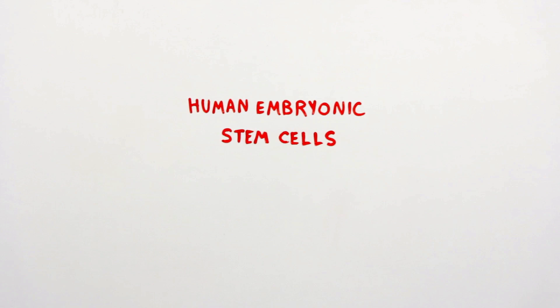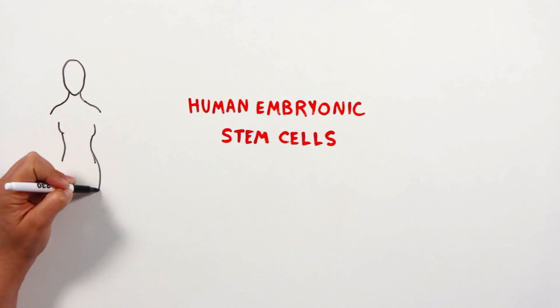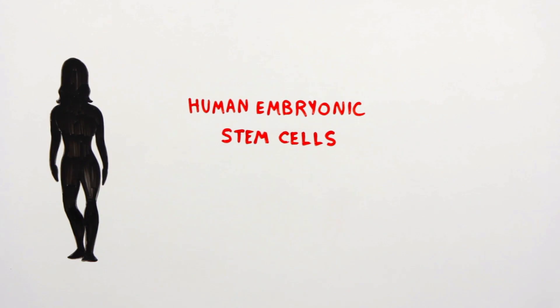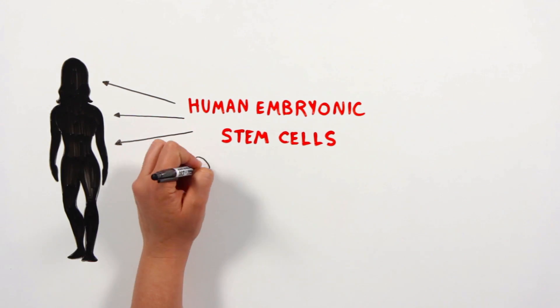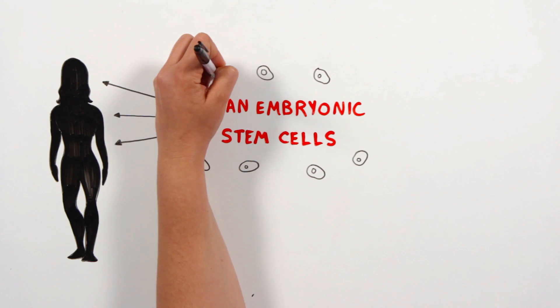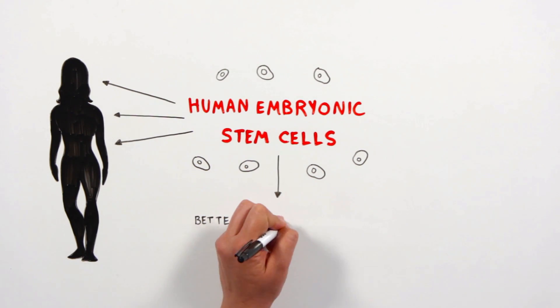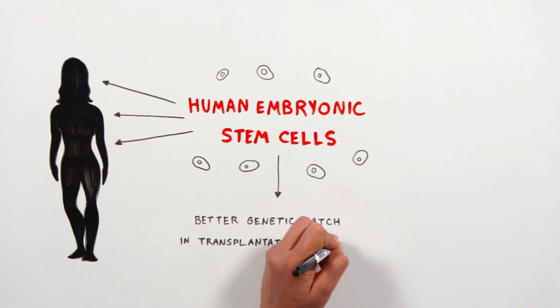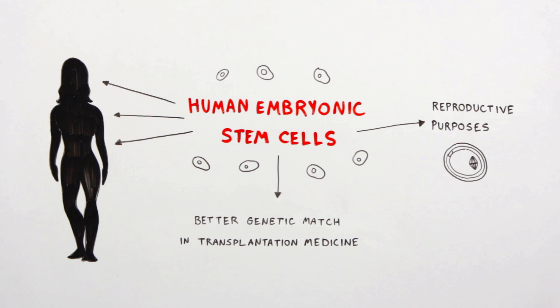Human embryonic stem cells hold an enormous promise for cell-based therapies, because of their potential to make any cell in the body. Since the haploid embryonic stem cells have only half of the genetic diversity, they can serve as a better genetic match in transplantation medicine and may also be suitable for reproductive purposes.